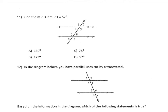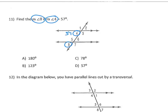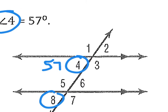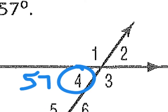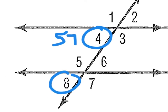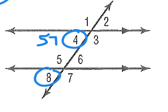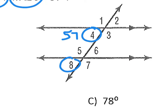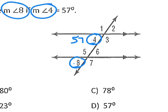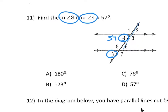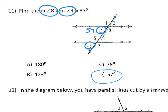Number 11: find the measure of angle 8 if angle 4 is 57 degrees. You can look at this as almost two separate pieces — the top part and the bottom part are basically duplicates of each other. Angles 4 and 8 are corresponding: the same angle measure on the same side of the transversal. So the answer should be the same measure: 57 degrees.